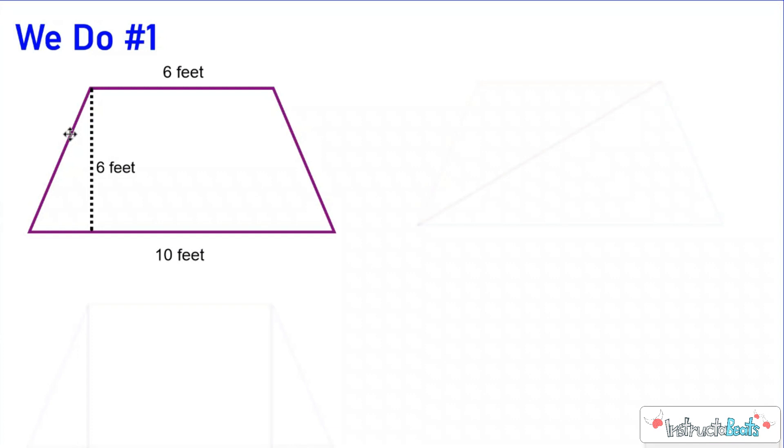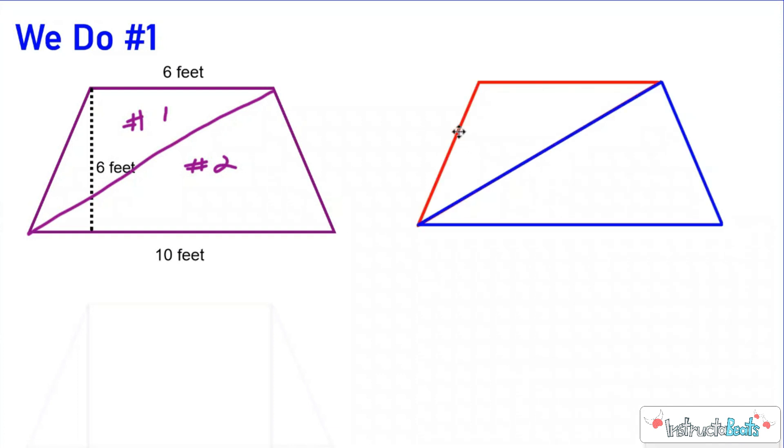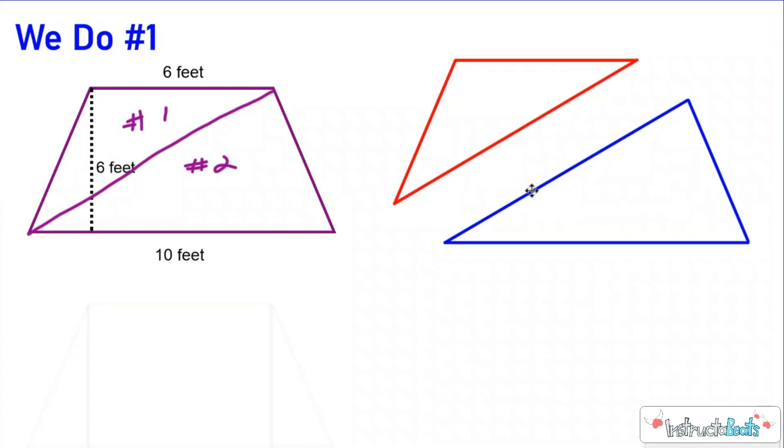So the first thing we want to do is we want to decompose this into triangles. So if I draw a line from this corner to this corner, and it would work if you drew it from the other corner to the other corner as well, so you don't have to remember what corner it is, you have made two different triangles. Now in fact, let me break this up into different colors so we can see them better. So here's our trapezoid, and I split it apart into this top triangle and this bottom triangle. Now if we find the area of those two triangles and just add them back together, we now know the area of the whole trapezoid.